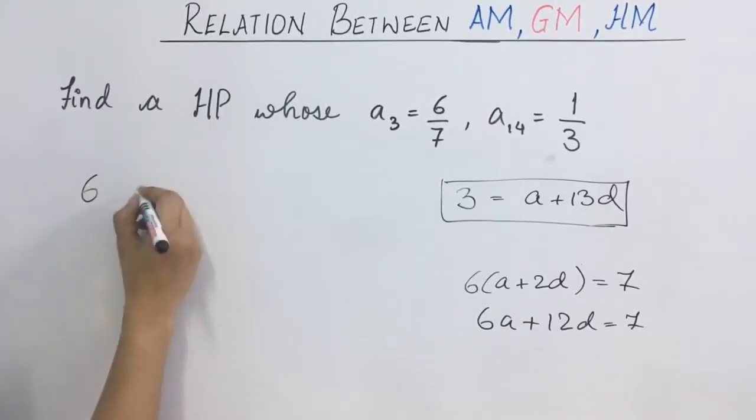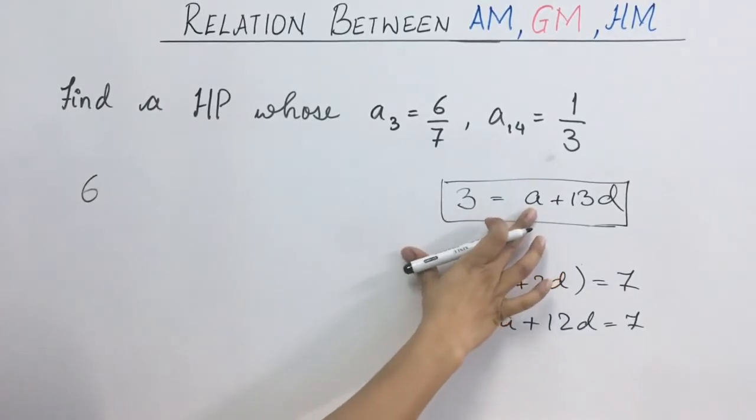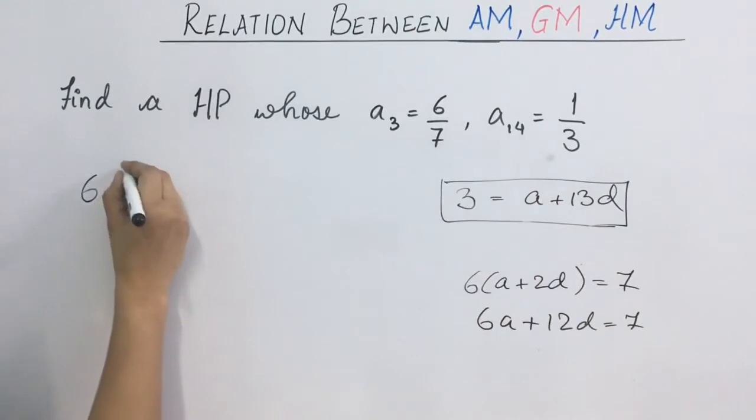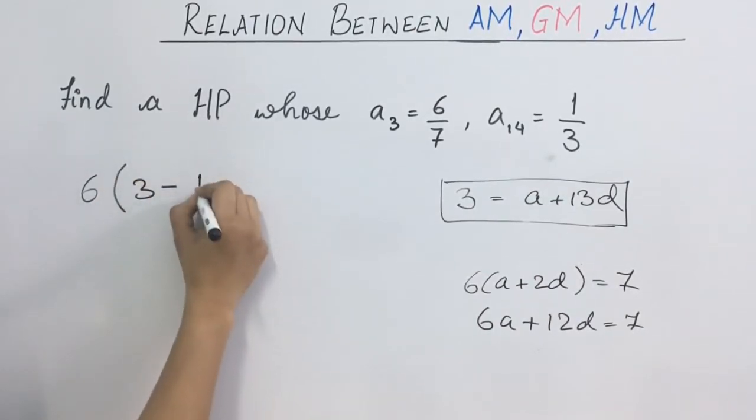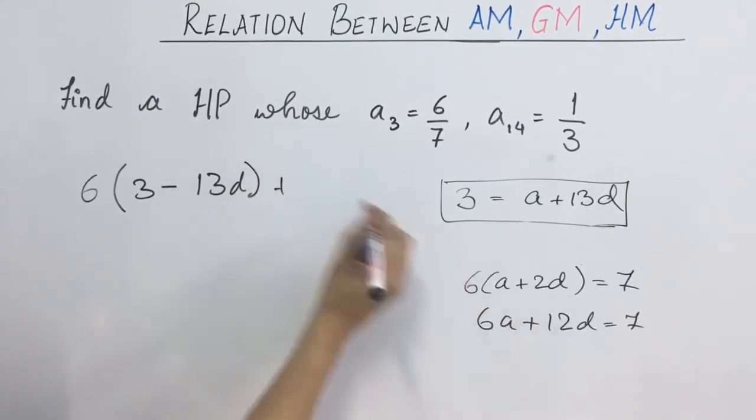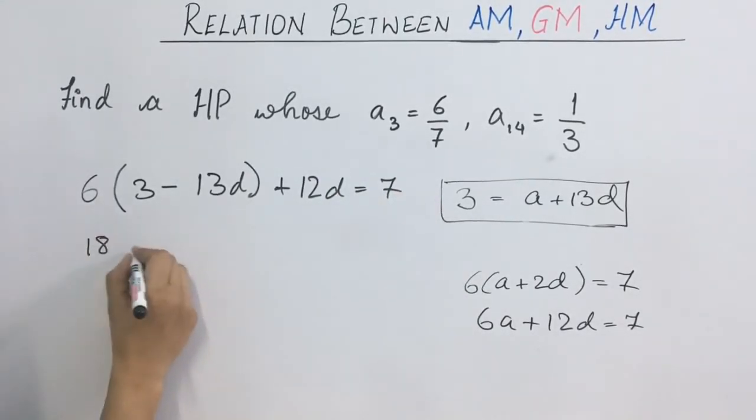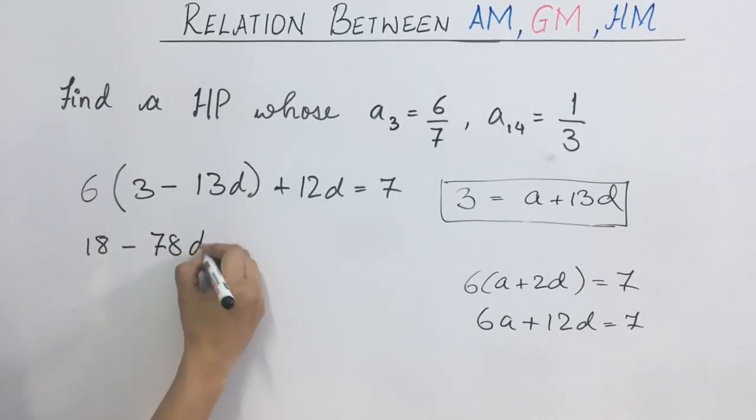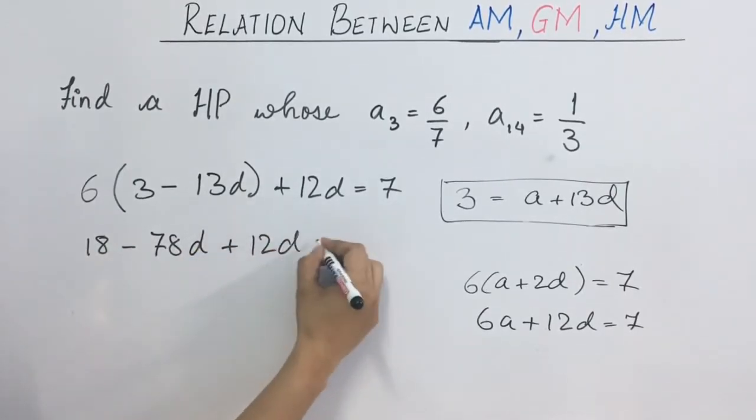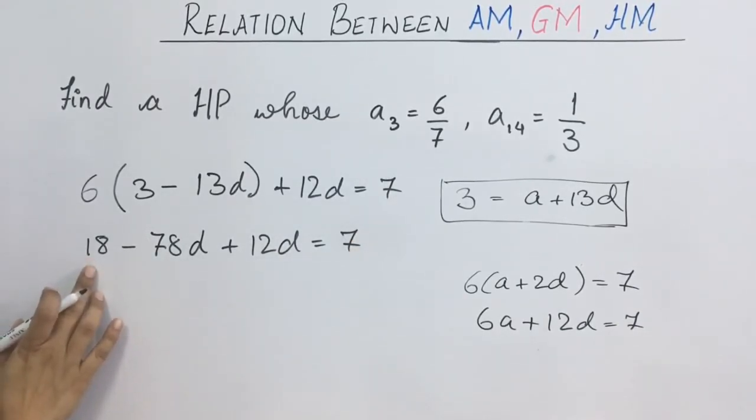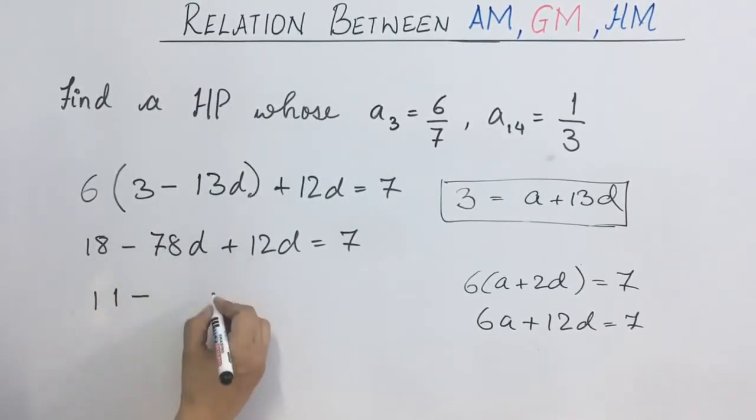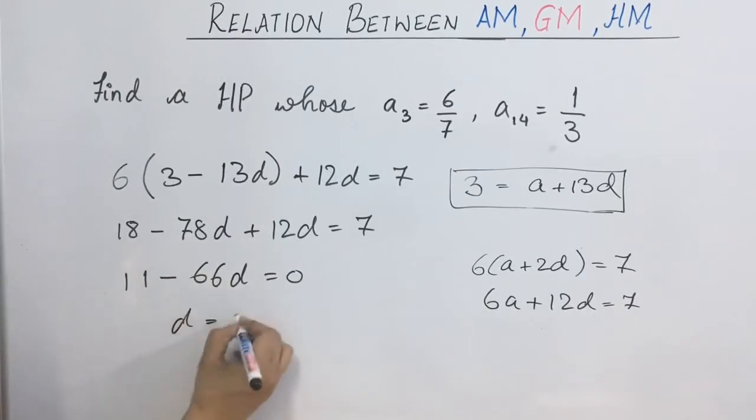Now in second equation, A value we take from first equation, so A will be equal to 3 minus 13D. So this is equal to 3 minus 13D plus 12D equals to 7. So this is equal to 18, 78D plus 12D equals to 7. Then the constants we bring to this side, 18 minus 7 will be 11. And 78 minus 12 will be 66. So D value is 11 upon 66 that is equal to 1 upon 6.